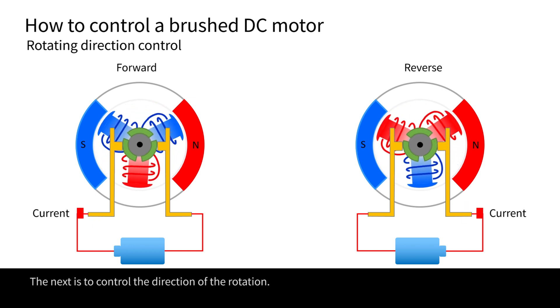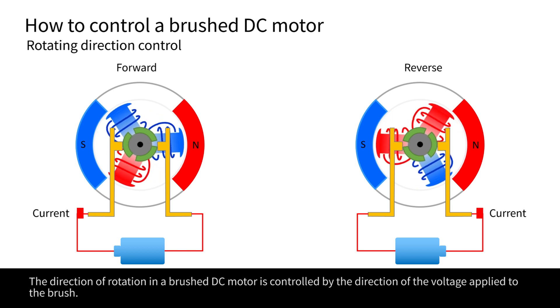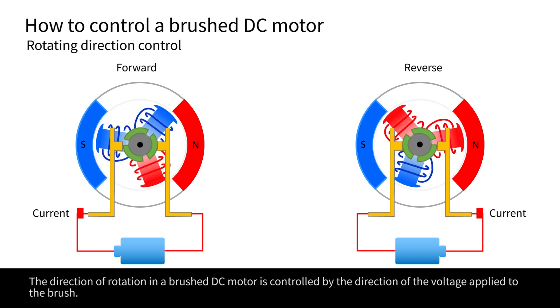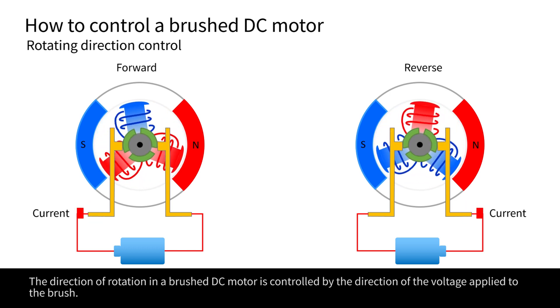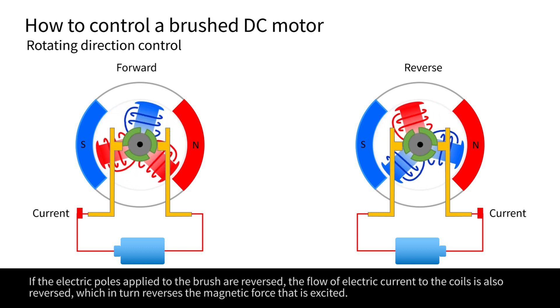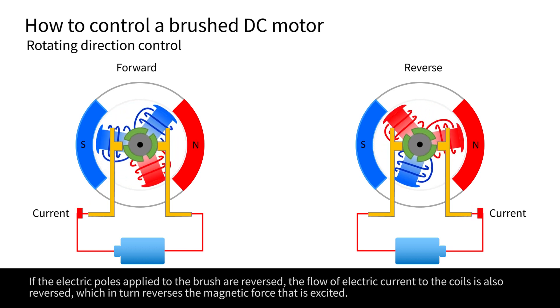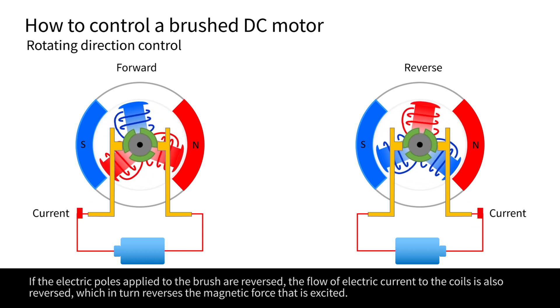The next is to control the direction of the rotation. The direction of rotation in a brushed DC motor is controlled by the direction of the voltage applied to the brush. If the electric poles applied to the brush are reversed, the flow of electric current to the coils is also reversed, which in turn reverses the magnetic force that is excited.